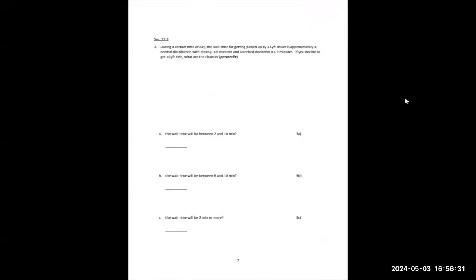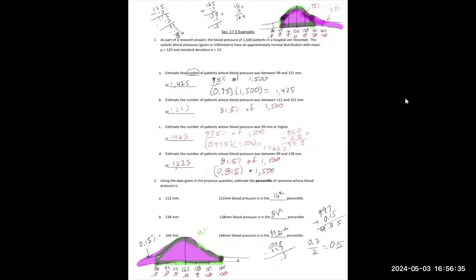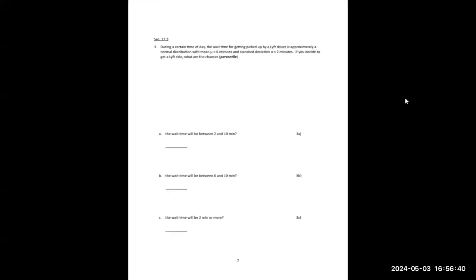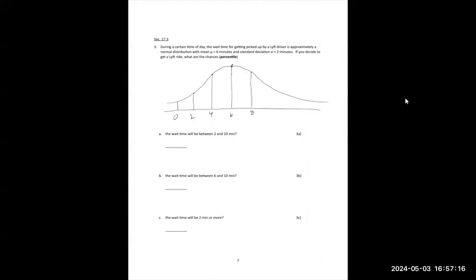One more example for percentiles. During a certain day, the wait time of getting picked up by a Lyft driver is approximately normally distributed with mean six minutes and standard deviation two minutes. I'll draw the picture: the mean is six in the middle. One standard deviation below is four, then two, then zero. On the other side, one standard deviation above is eight, then ten, and then twelve. Because the standard deviation is two: six plus two is eight, eight plus two is ten, ten plus two is twelve; six minus two is four, four minus two is two, two minus two is zero.